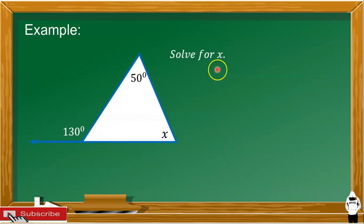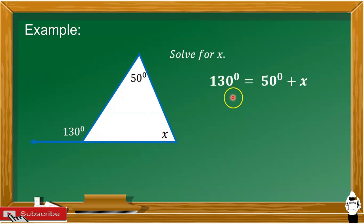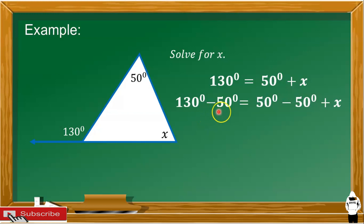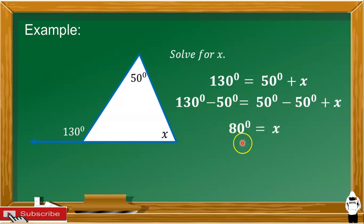Let's have another example. Solve for x. The exterior angle is 130 degrees and the remote interior angles are 50 degrees and x. Use the equation: exterior angle is equal to the sum of the remote interior angles. So we have 130 is equal to 50 plus x. Using subtraction property of equality, 130 minus 50 equals 80, so x equals 80. The measurement of this angle is 80 degrees.